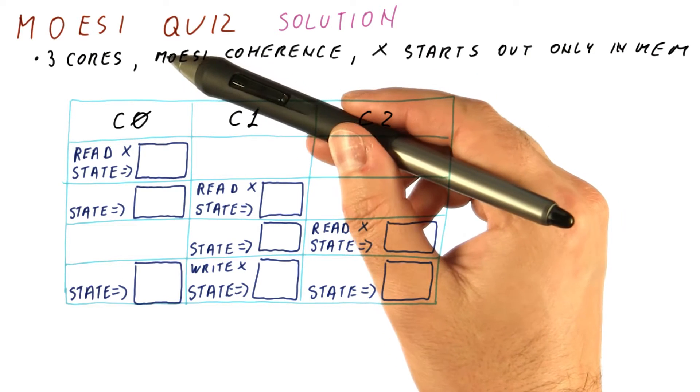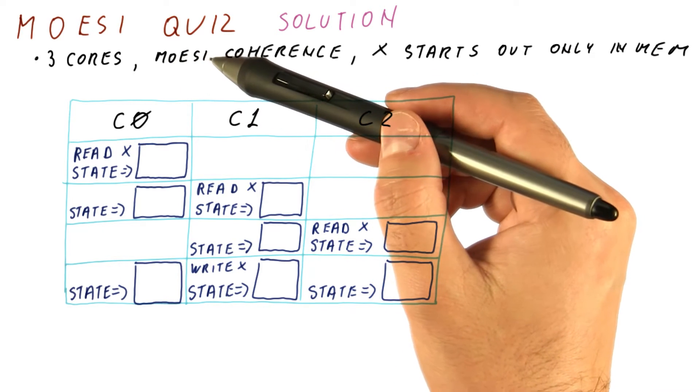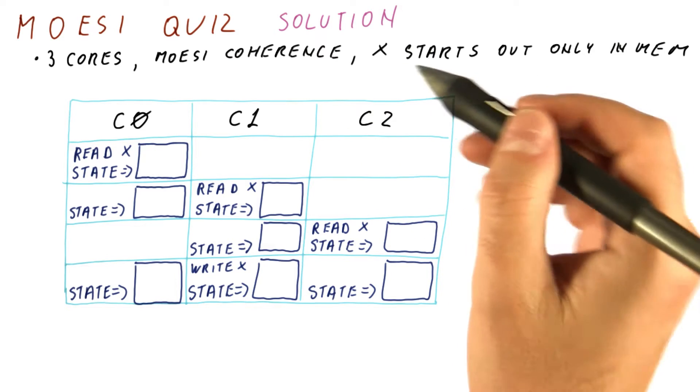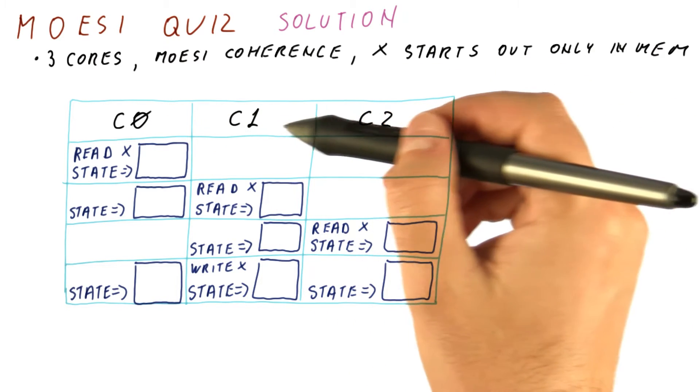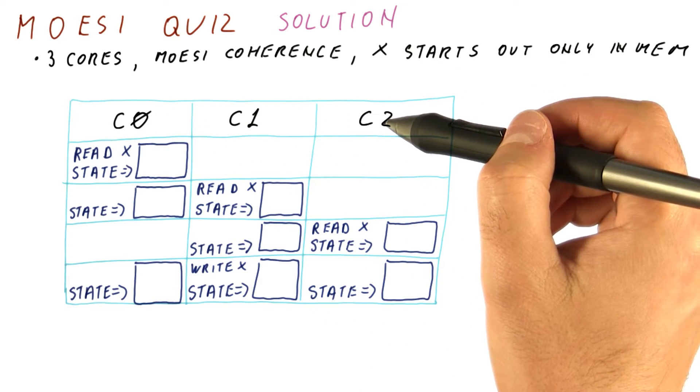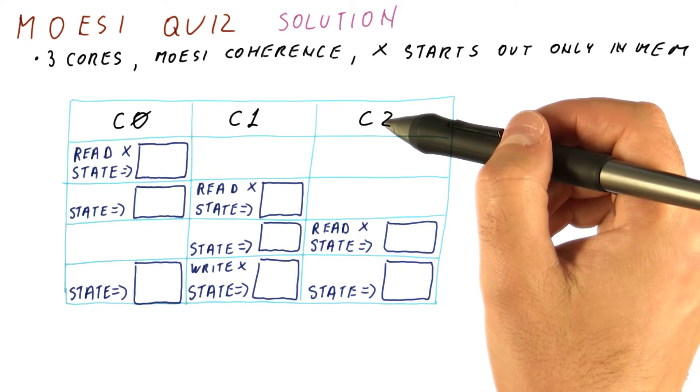In a MOESI protocol, the state can be M, O, E, S, or I. Initially, all of the cores have the block in the I state in their caches.